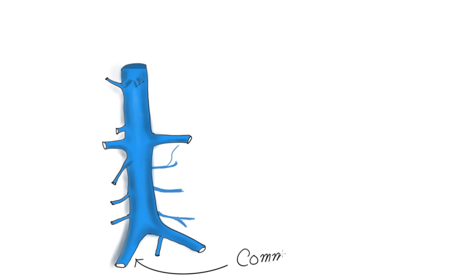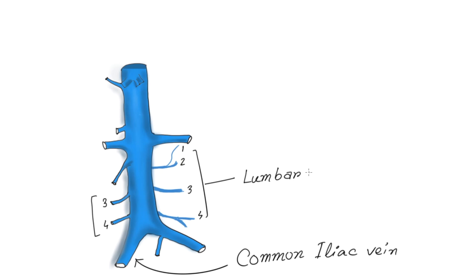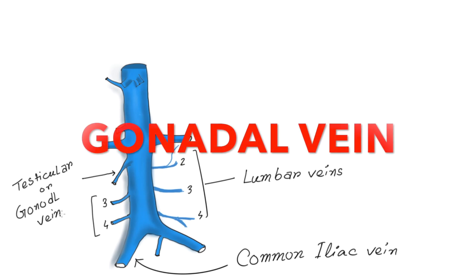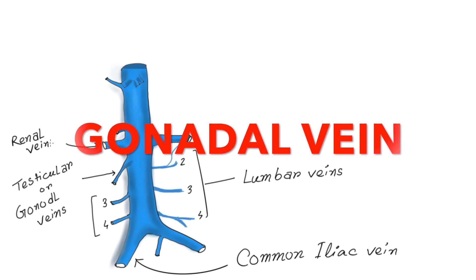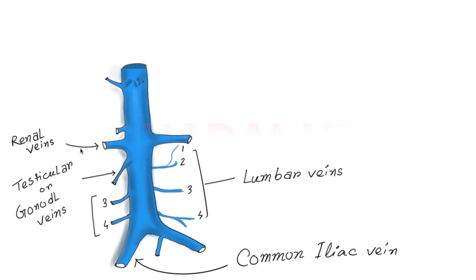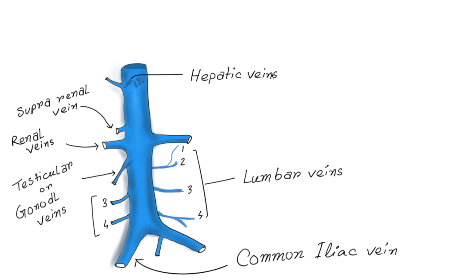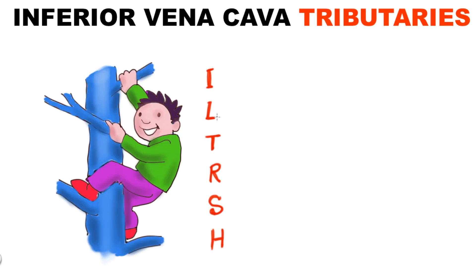If we go upward from below, the lowermost branch is the common iliac vein. Then there are small tributaries called lumbar veins. Then it is the testicular vein or gonadal vein, and just above the gonadal vein there are two renal veins. Then above the renal veins is the suprarenal vein, and at the top portion there is the hepatic vein.